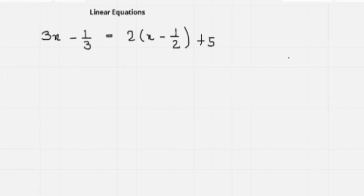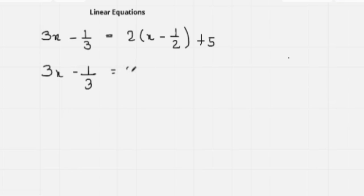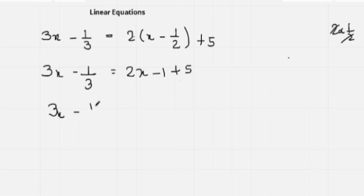Now taking another question: 3x minus 1 over 3 equals 2 times (x minus 1 over 2) plus 5. First I multiply 2 into the bracket. 2 times x is 2x, and 2 multiplied with 1 over 2 — the 2 cancels, leaving only 1 — so we get minus 1. Then minus 1 plus 5 gives 4.